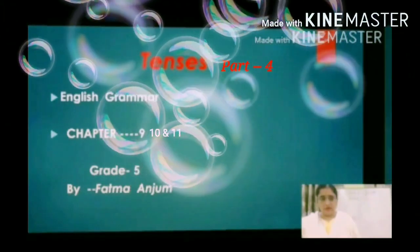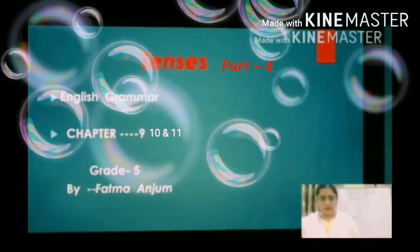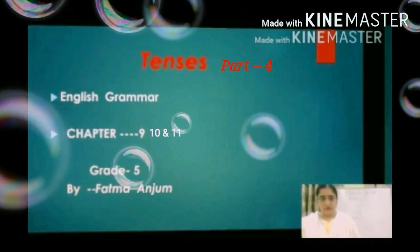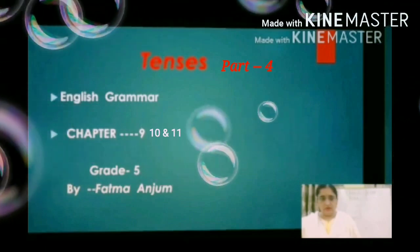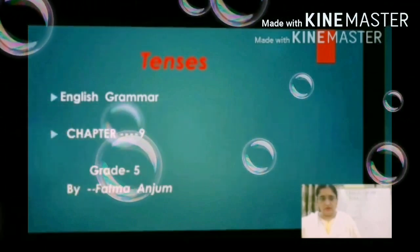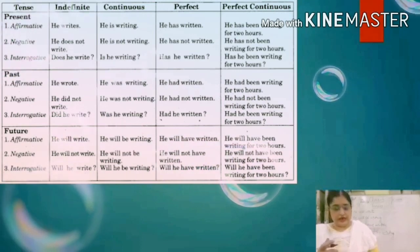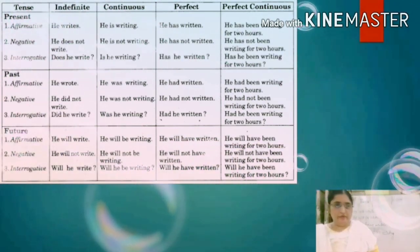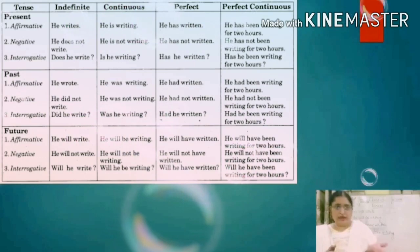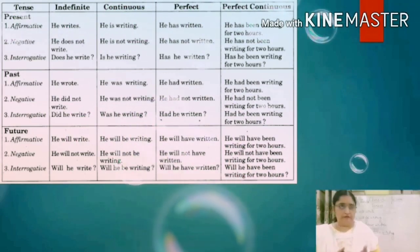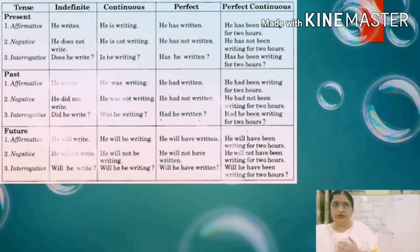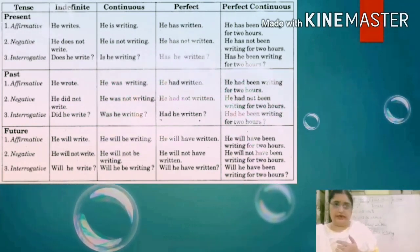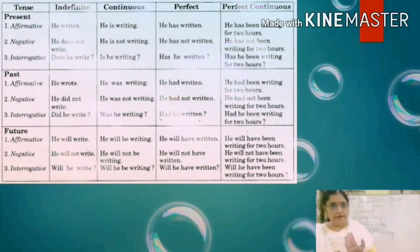Good morning students. Today I am going to explain tenses with the help of a chart. Look carefully at the chart on your mobile screen. As you know, there are three types of tenses: present, past, and future, and these three are divided into four forms: indefinite, continuous, perfect, and perfect continuous.